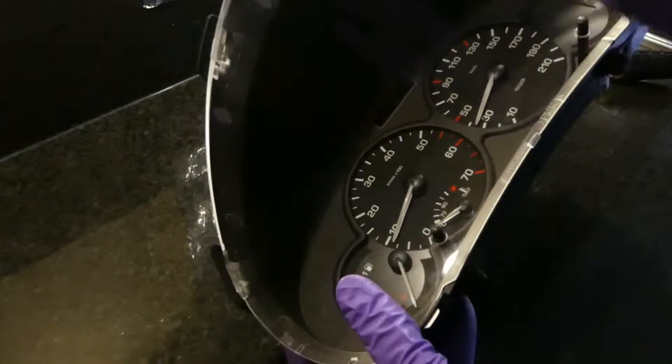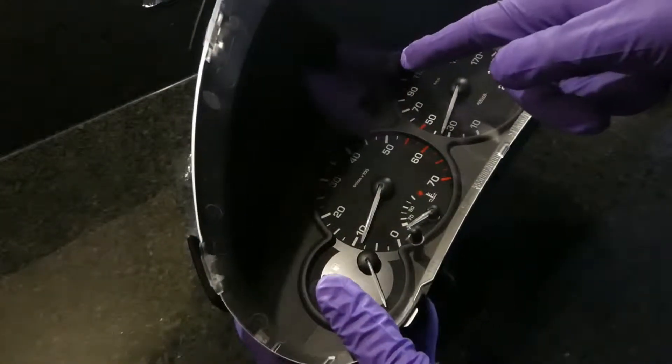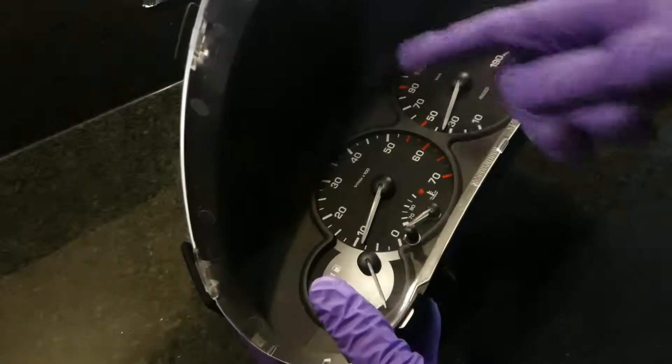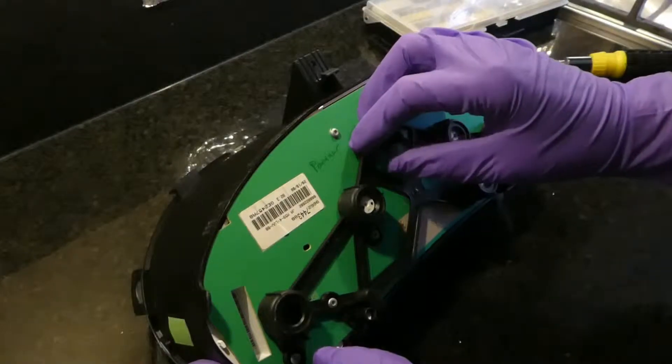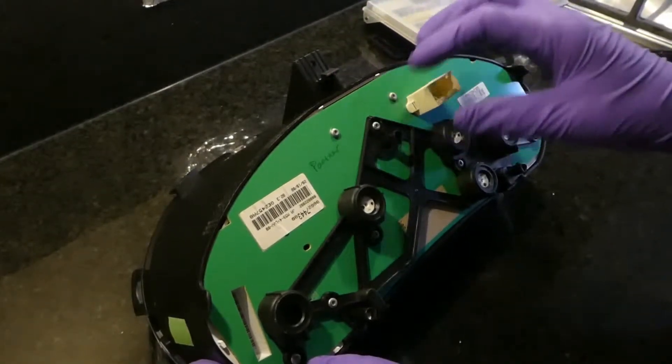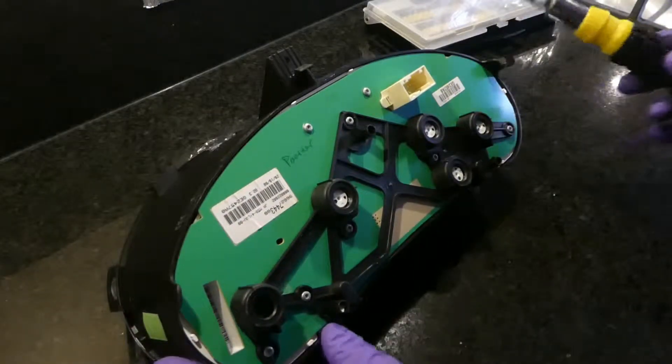One thing you need to be careful about if you have the same instrument panel is to really be careful about this LCD. When this slides out it will either stay on or be stuck to the thing, so it might break if it falls out. Let's do the 8 bolts.